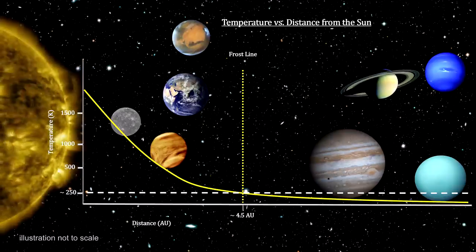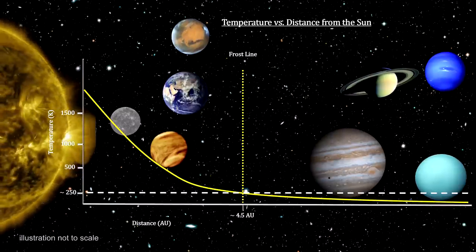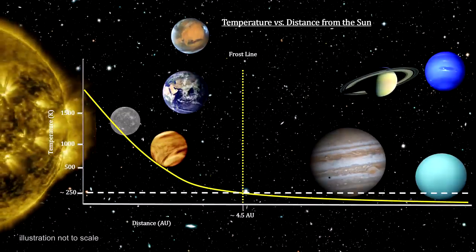Our frost line is between 4 and 5 astronomical units. That puts it at the far rim of the asteroid belt.